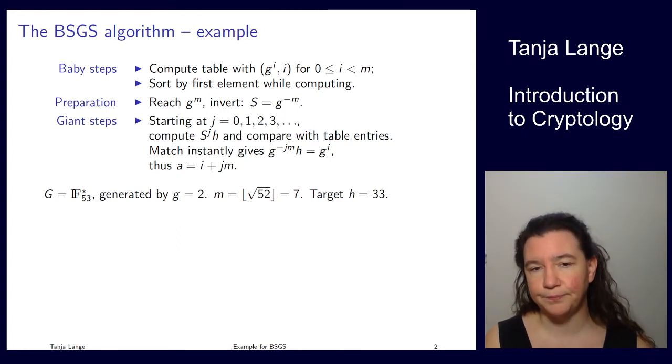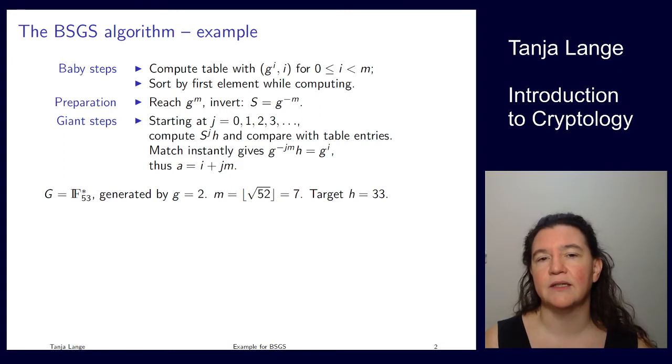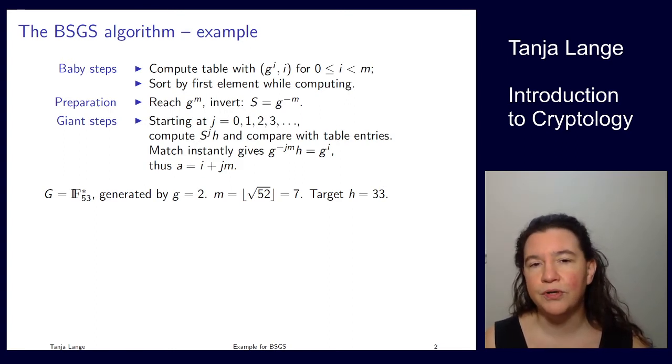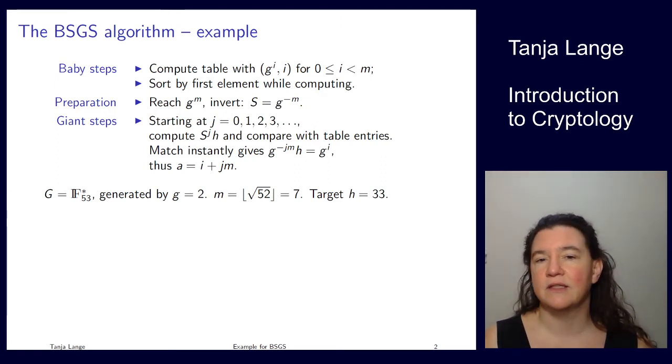The first step is to define what m is. We take the group order, 52 here, take the square root of that, which is 7 point something, and then take the floor function, rounding down. So 7 point something gets rounded to 7.